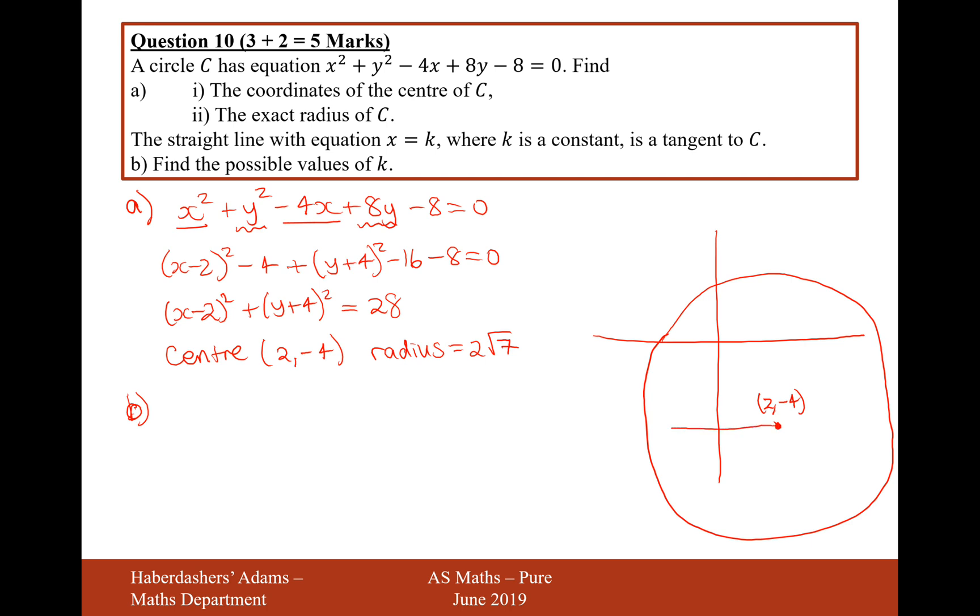And the radius is 2 root 7. The line x equals k is going to look like this - a tangent here and a tangent here. So we want to find the possible values for k. In that case, k is going to equal 2 minus 2 root 7 for this tangent here. And then for the other tangent, x equals 2 plus 2 root 7 for this tangent over here.